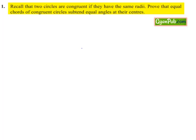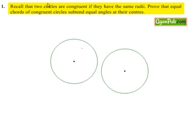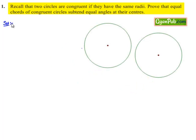Now moving on to the solution. Let us consider two congruent circles as shown in the figure. Let the center of one circle be O and the other be O'. We know that the radii of the two circles will be equal.